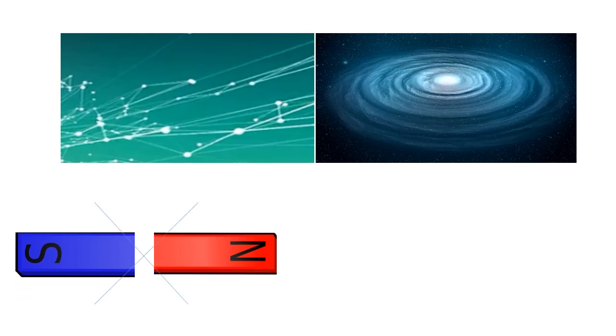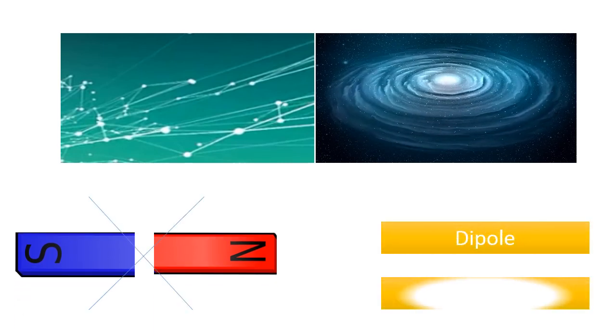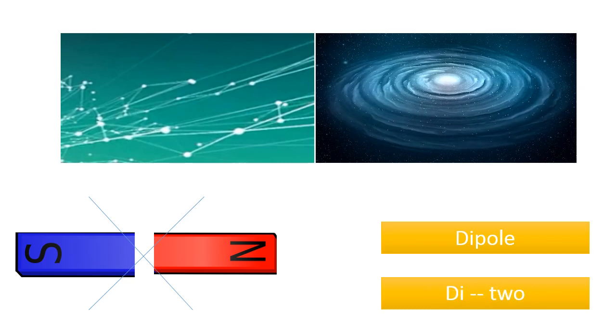From the tiniest subatomic particles like electrons to the largest cosmic objects like stars, no experiment has ever discovered an object with a single magnetic pole. Magnets are referred to as magnetic dipoles, because they always have two poles; the prefix di stands for two.